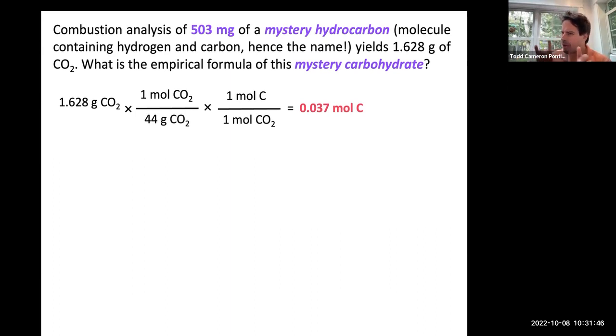Now, how can we backtrack and figure out how much hydrogen was in this molecule? Since we know the amount of carbon, we can actually find the mass of carbon in our mystery hydrocarbon. So, I'm going to take this 0.037 moles of carbon, and I'm going to convert it into grams of carbon. Carbon weighs about 12 grams per mole.